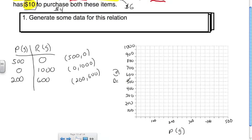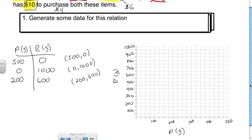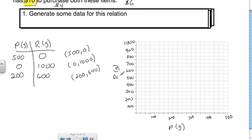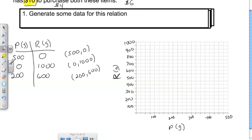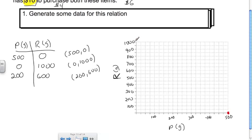I could have flipped this — putting peanuts as the range and raisins as the domain — it wouldn't have made a difference. I chose this way because peanuts came first in the question. Our first point is (500, 0), our next is (0, 1000), and our third is (200, 600), which is right here.